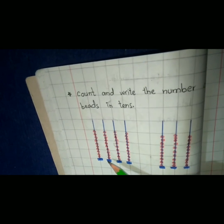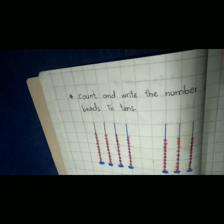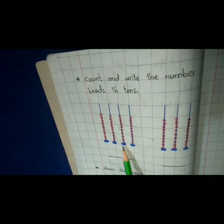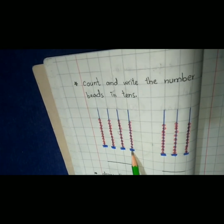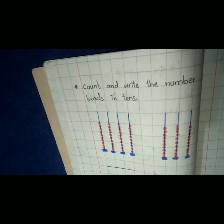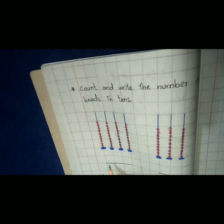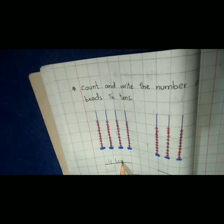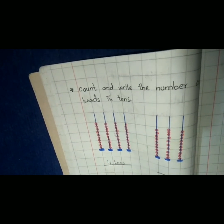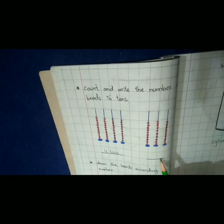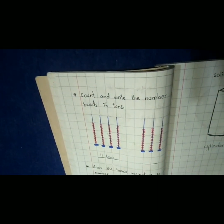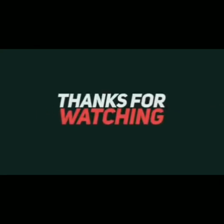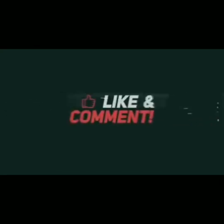We have ten beats in a row. We count one, two, three, four, five, six, seven, eight, nine, ten. Here we have four rows of ten beats — that means four tens. Do this by yourself. Thank you, bye!